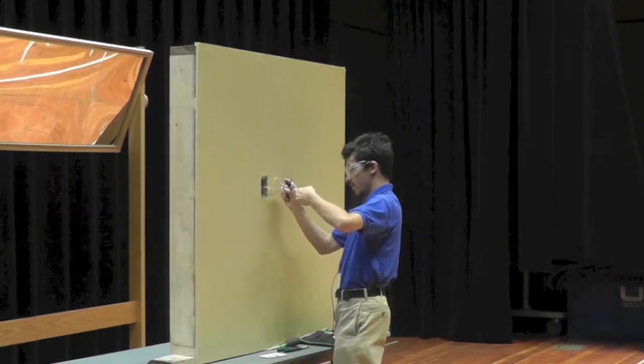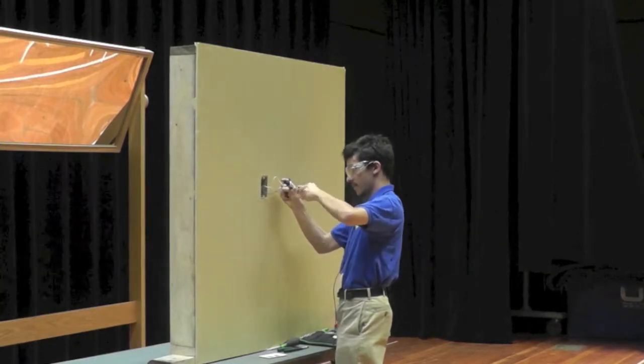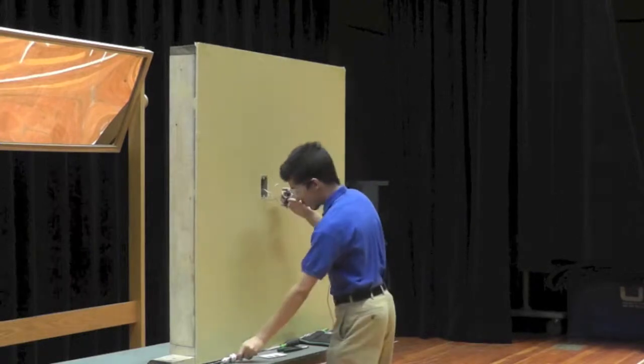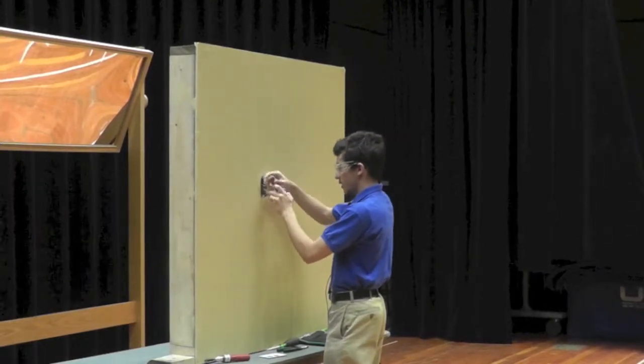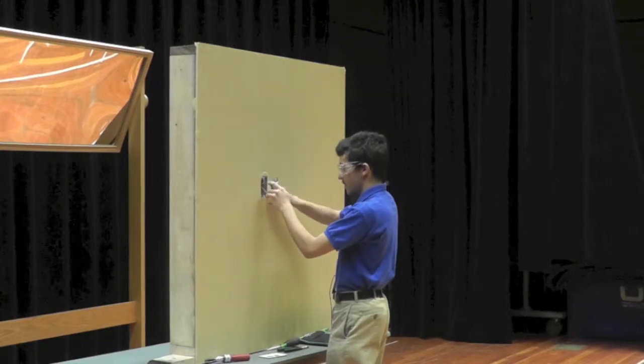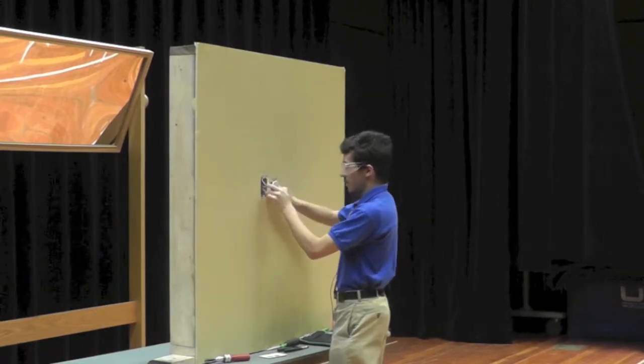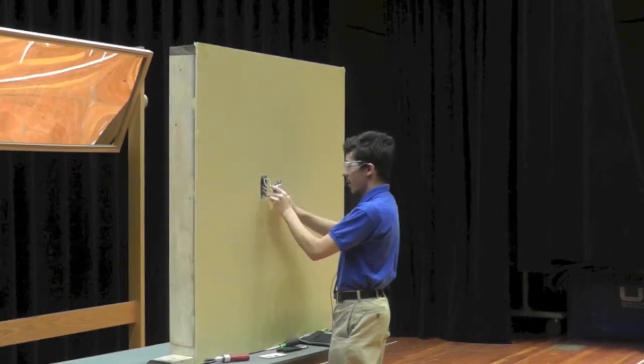And once again until you hear the click and the screw is sufficiently tightened. Now we will carefully fold the wires to the back of the box, the non-metallic outlet box that is nailed on behind this wall.